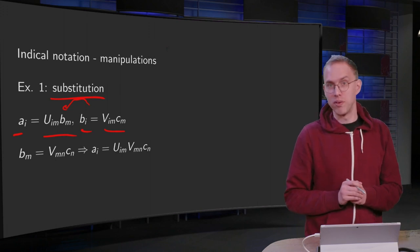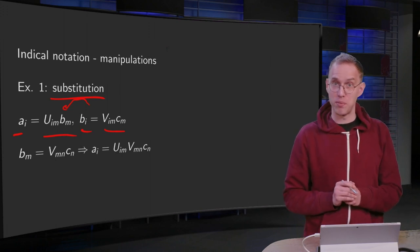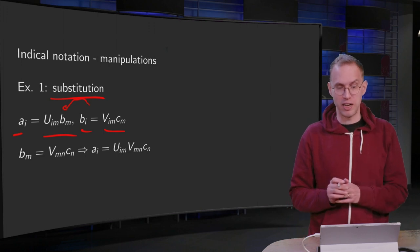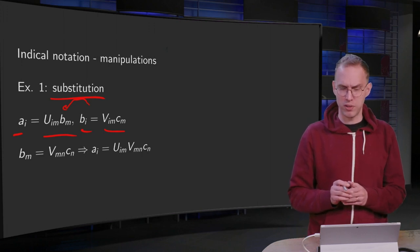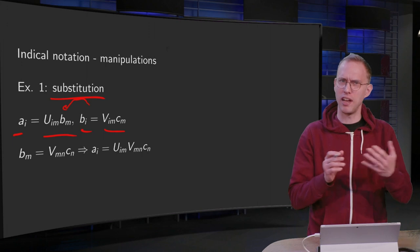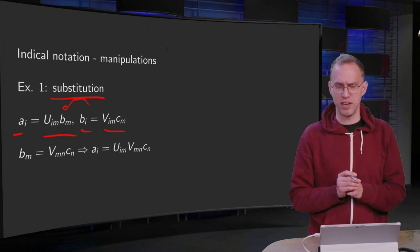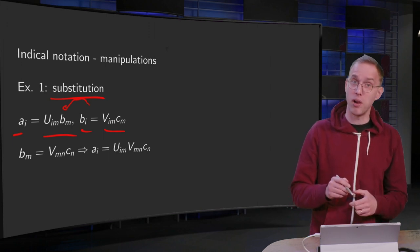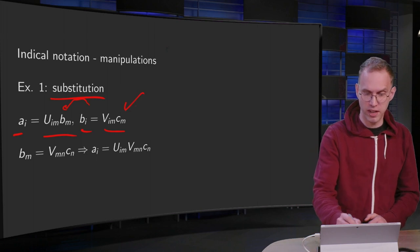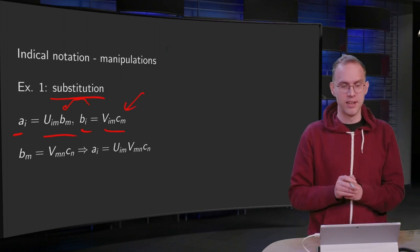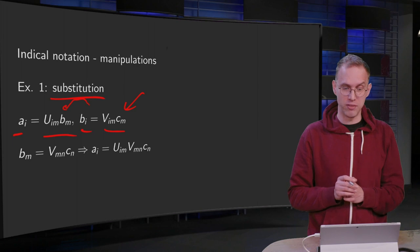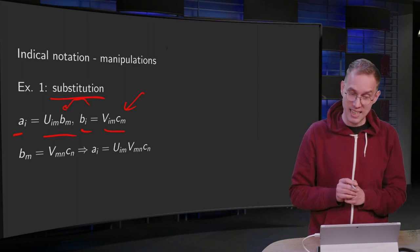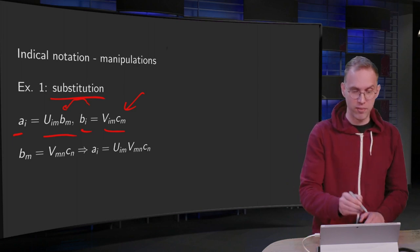First of all, I don't want to have b_i but I want to have b_m, so I want to write b_m. But then we would have V_mm c_m, that's not right, and we would have an index m three times. So we also need to switch the dummy variable here to, for example, n. So then we have first b_i = V_in c_n.